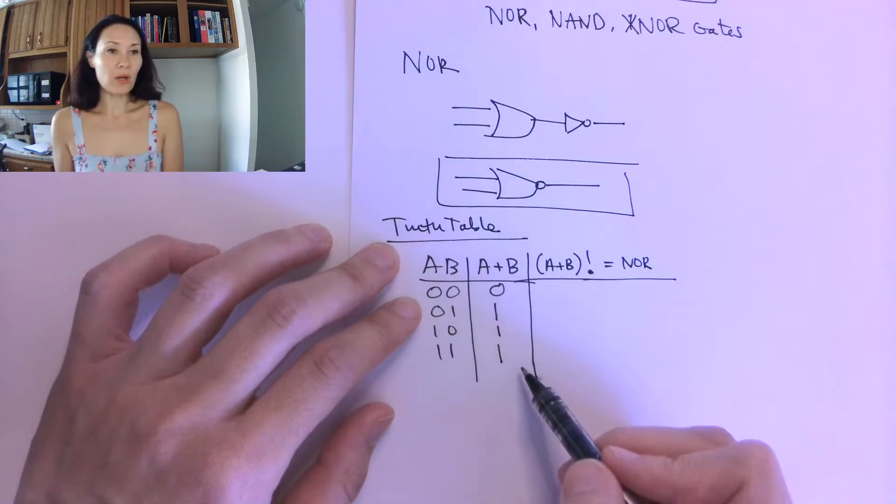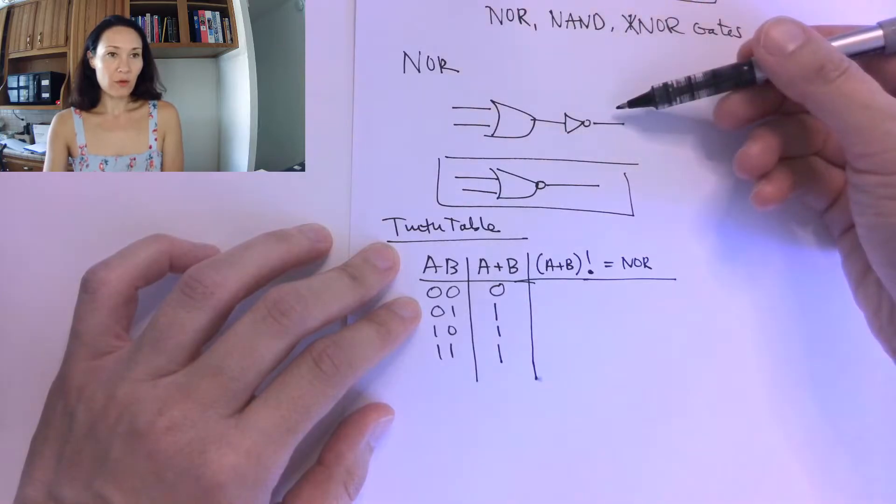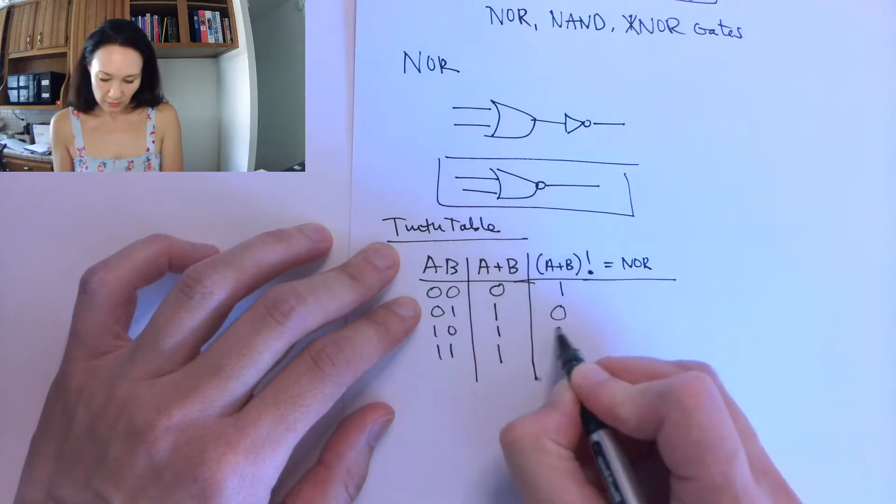Now, I basically take this OR column, that would be the output of this OR, and then I invert it. So I flip all these bits. If this is a 0, this becomes a 1, and these are 0s.